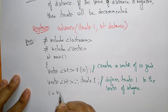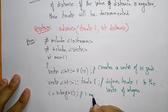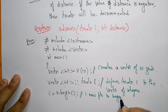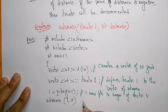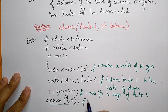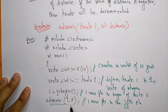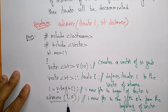Now i = v.begin() means i now points to the beginning of the vector. Then we write advance(i, 5) — this means i now points to the fifth element from the beginning of the vector. Suppose we write advance(i, -1): since the distance is negative, the iterator will be decremented. So i now points to the fourth element from the beginning of the vector instead of the fifth.